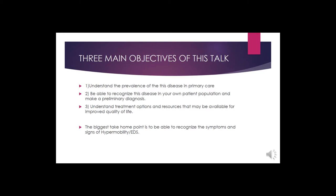There are three main objectives of this talk. First, to understand the prevalence of this disease in primary care. Second, to be able to recognize this disease in your own patient population and make a preliminary diagnosis. Third, to understand treatment options and resources available for helping these patients improve quality of life. The biggest take-home point is to recognize the symptoms and signs of hypermobility and Ehlers-Danlos syndrome, because it makes a big difference in their medical treatment.